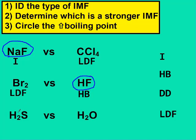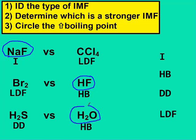For the last one, they both have lone pairs on the central atom, so they're both polar. H2S has hydrogen, but not attached to N, O, or F, so that's dipole-dipole. In water, it's a polar molecule, but hydrogen is attached to oxygen, so that's hydrogen bonding. Hydrogen is stronger, so we would expect water to have a higher boiling point than H2S.